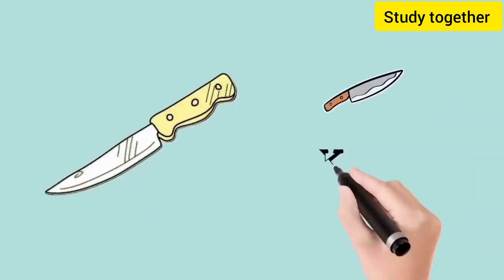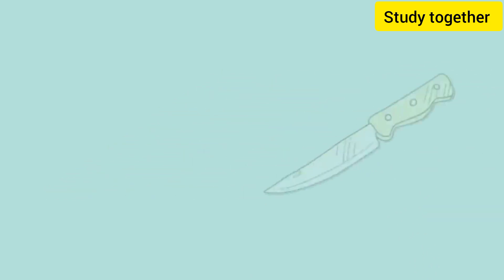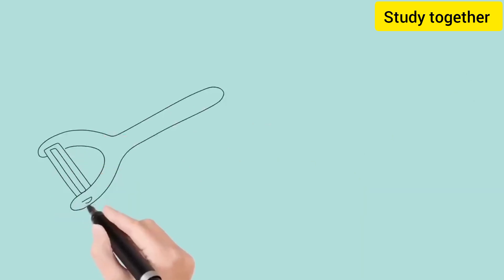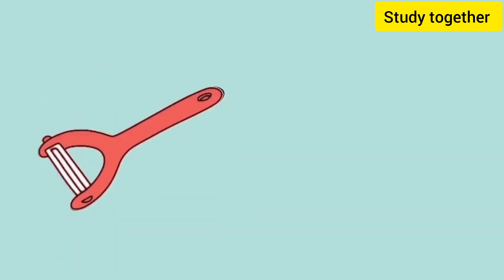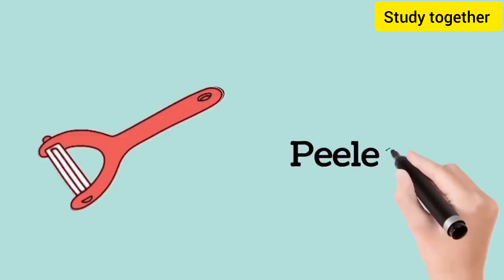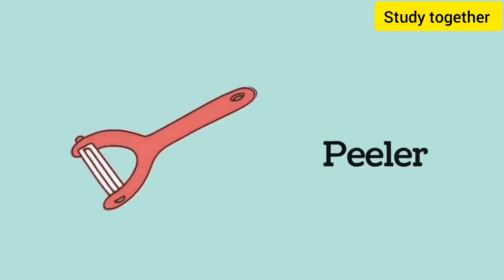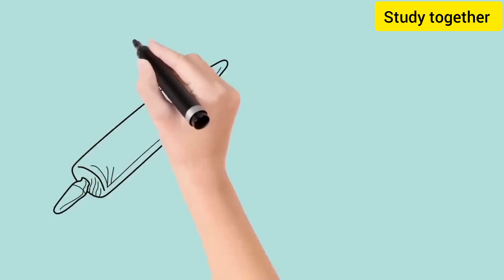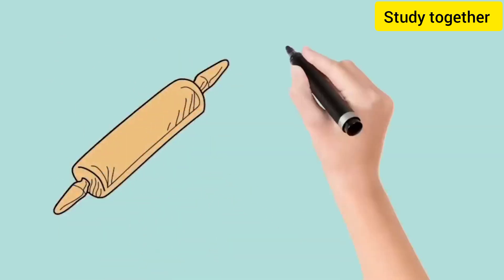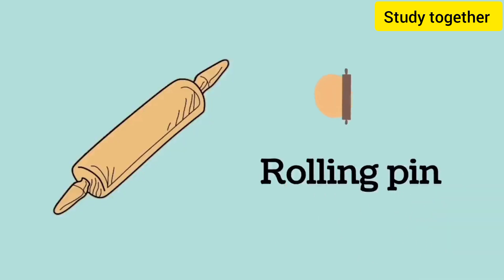This is a knife, we call it knife. This is a peeler — we use it for carrot and potato — we call it peeler. This is a rolling pin, we call it rolling pin.